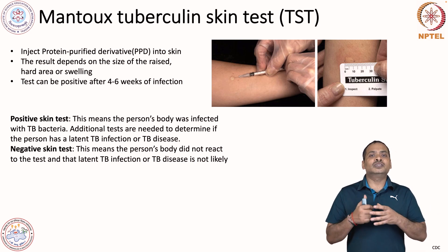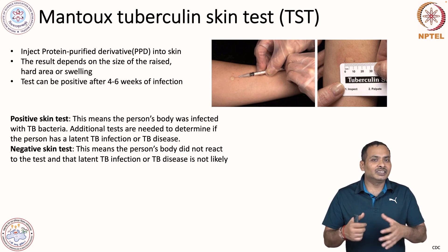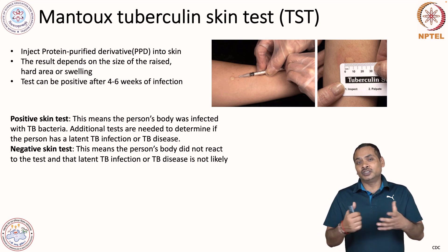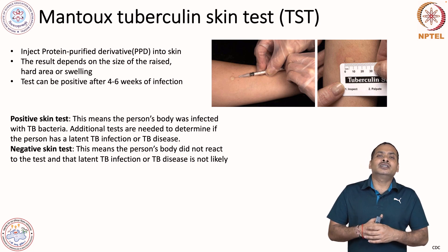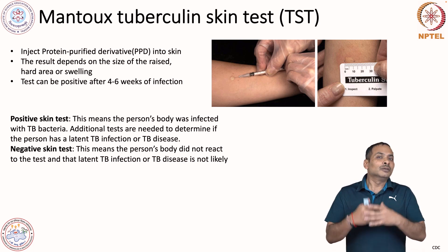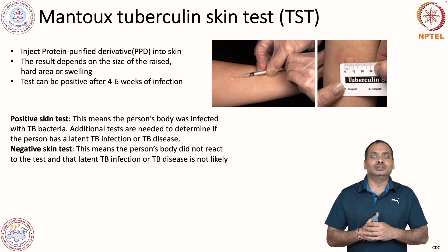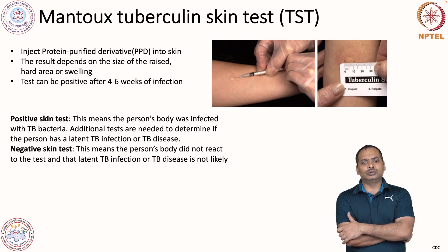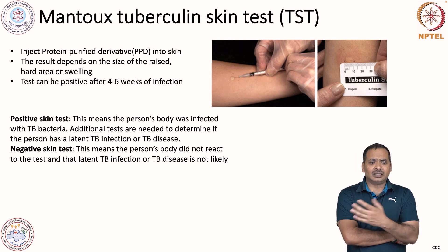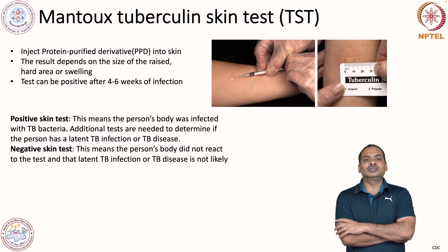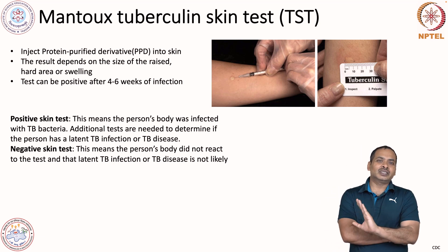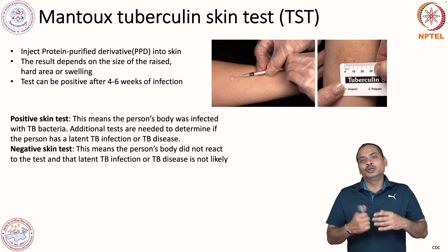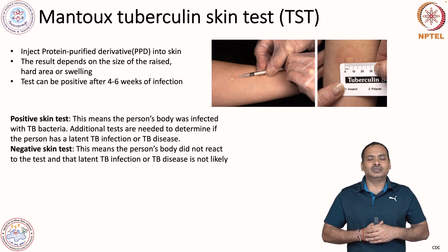The most definitive investigation is to identify Mycobacterium tuberculosis from the patient's sample. For pulmonary tuberculosis, one has to find the presence of Mycobacterium tuberculosis in the sputum sample. A negative skin test means the person's body did not react, and latent tuberculosis infection or TB disease is not likely. A negative result is relatively clear, but a positive result is quite ambiguous.